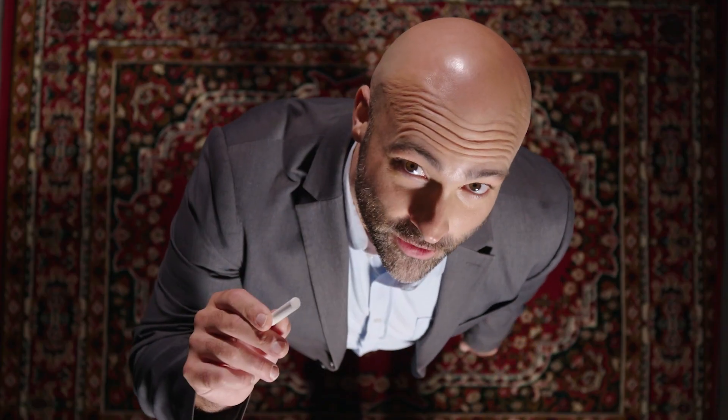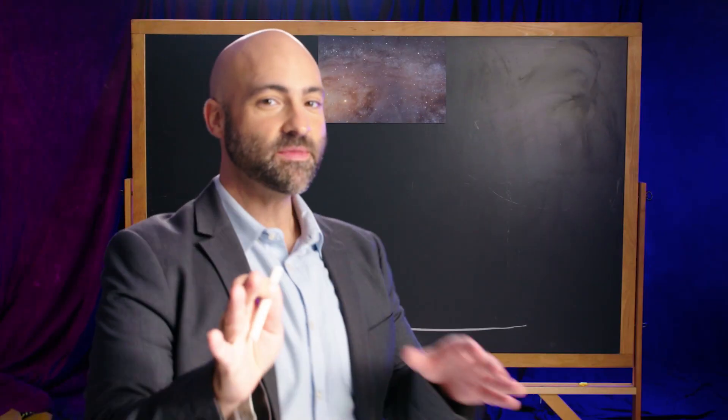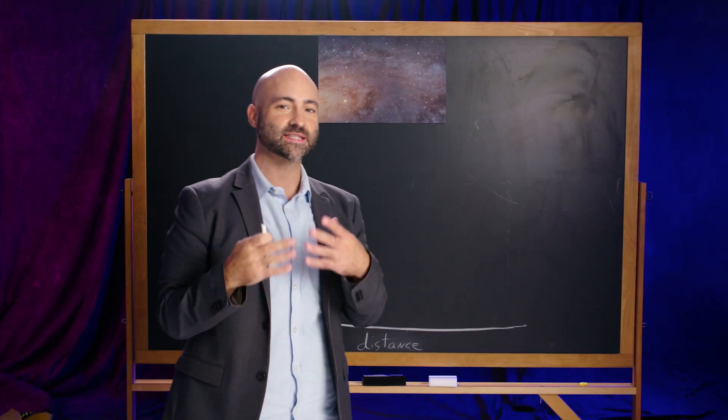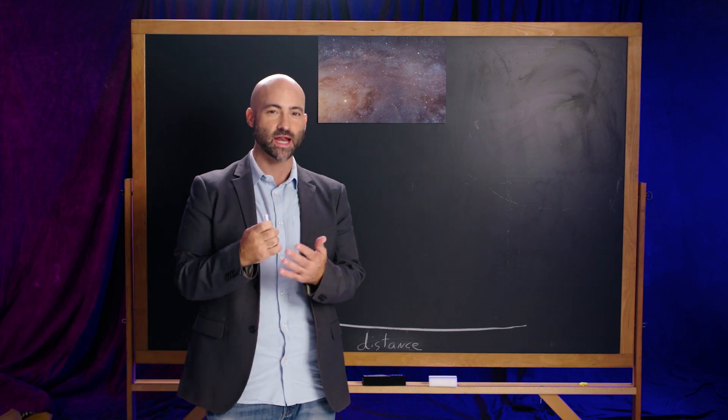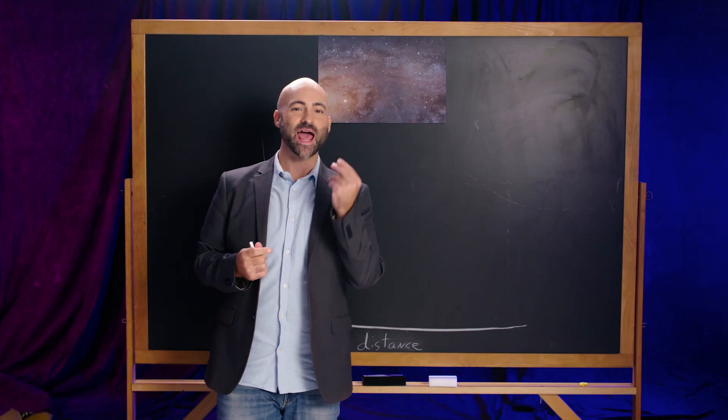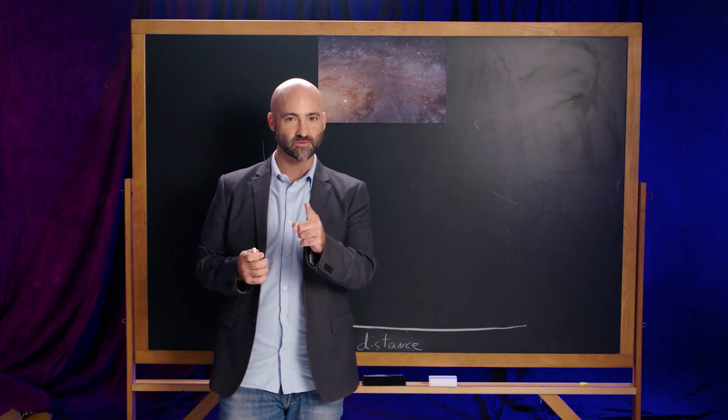There are some things we do know about dark matter, but to tell you, I need to go to the chalkboard. Let me show you one of the pieces of evidence we have for dark matter — not just to infer that dark matter exists, but to figure out how it acts in our universe. To do that, we're going to look at rotation curves.